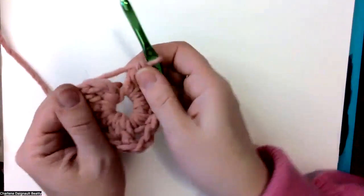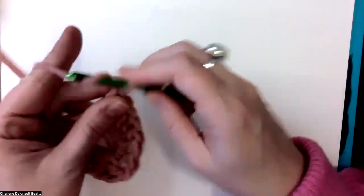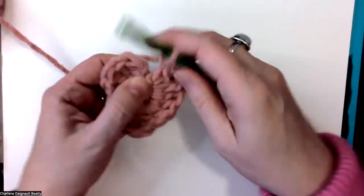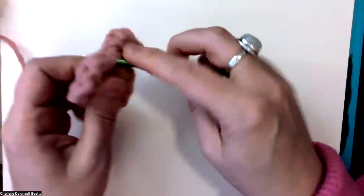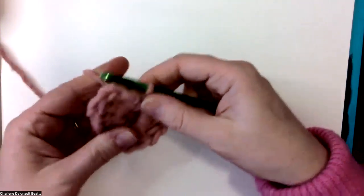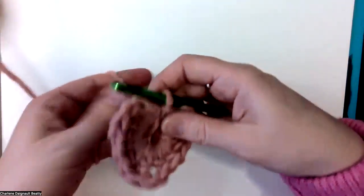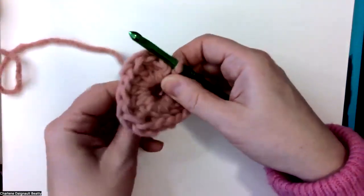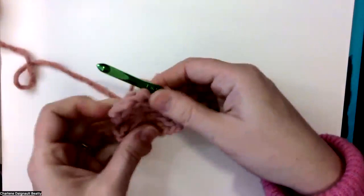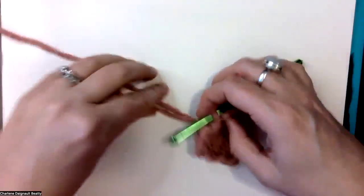To finish this heart off, we're going to chain two, one, two, and I'm going to slip stitch into the ring. So in here I'm going to slip stitch. Okay, so slip stitching, I need to make sure I know where my tail is, so I'm going to pull on the tail as tight as I can, and then you got yourself your heart.